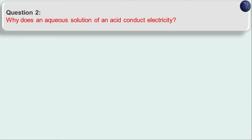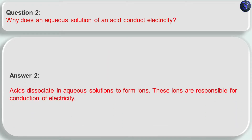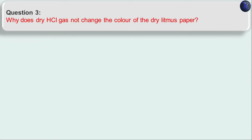Question two: why does an aqueous solution of an acid conduct electricity? This was covered in activity 2.8 — click the I button if you haven't watched it. In activity 2.8 we saw that solutions of HCl and H₂SO₄ conduct electricity and the bulb glows, but glucose and alcohol solutions do not make the bulb glow. The answer: acids dissociate in aqueous solution to form ions, and these ions are responsible for the conduction of electricity.